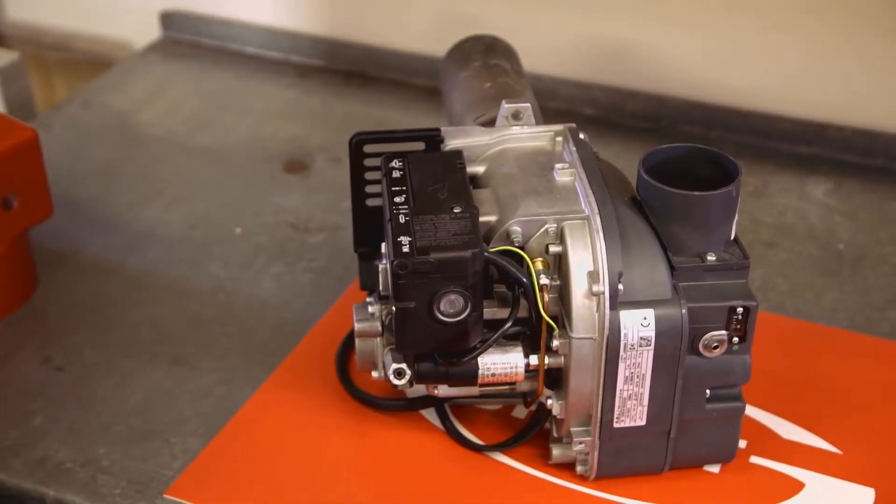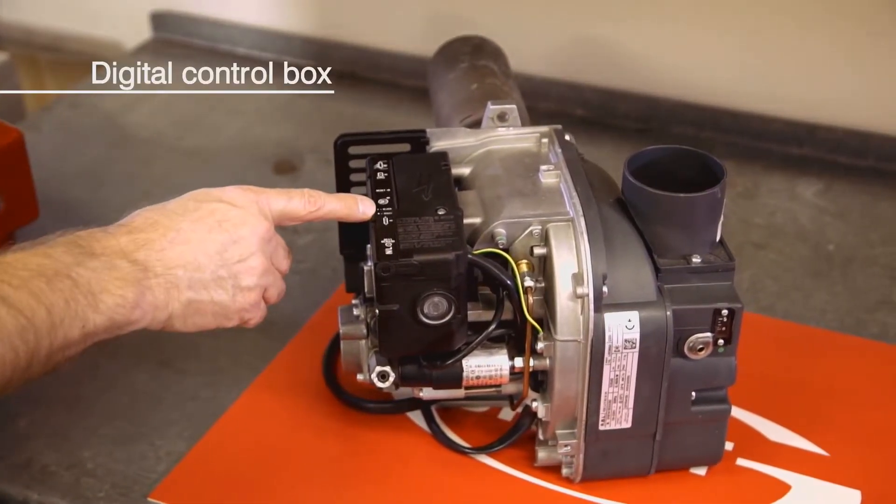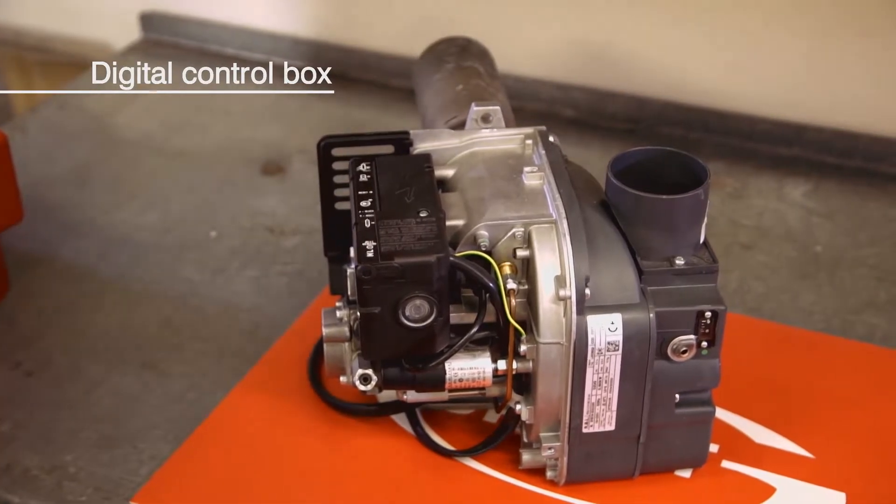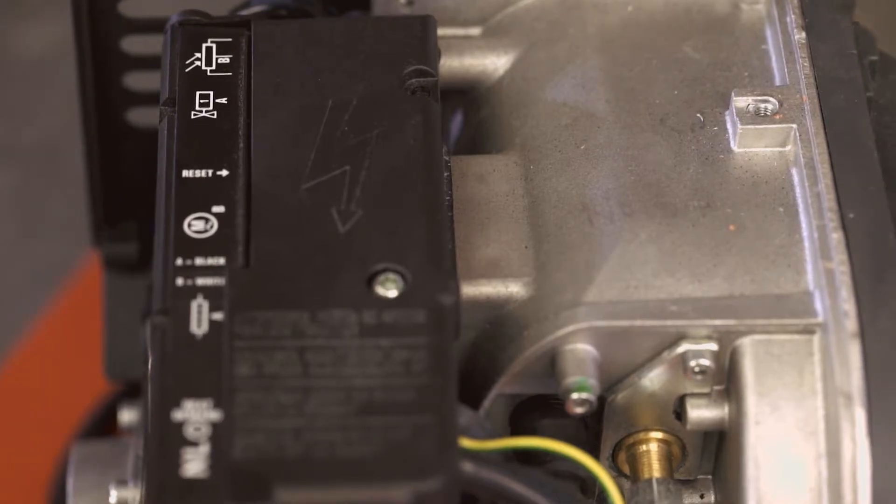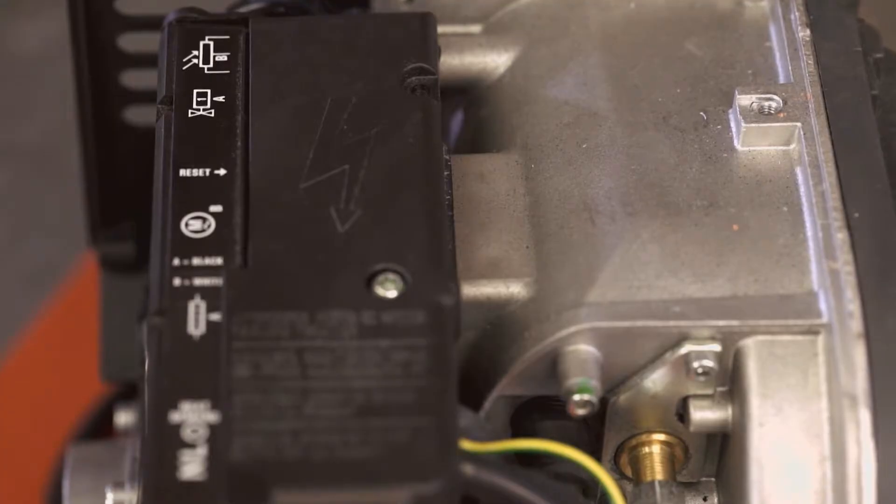This UV cell requires a digital control box instead of the 535SE analog box more commonly found on RDB burners. From the outside this control box looks very similar to the analog box.